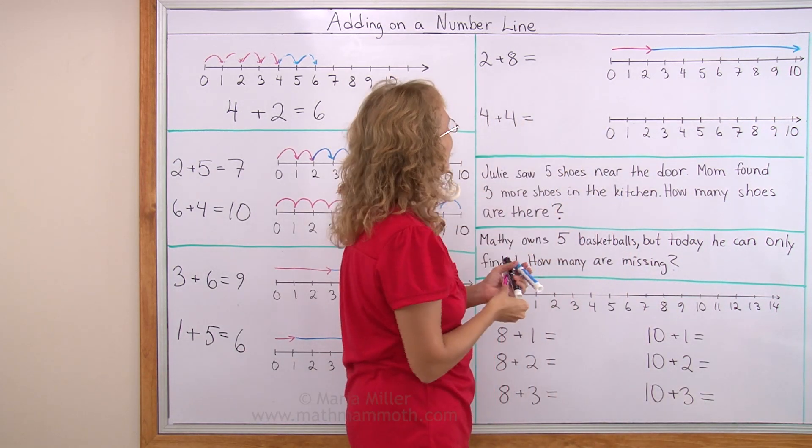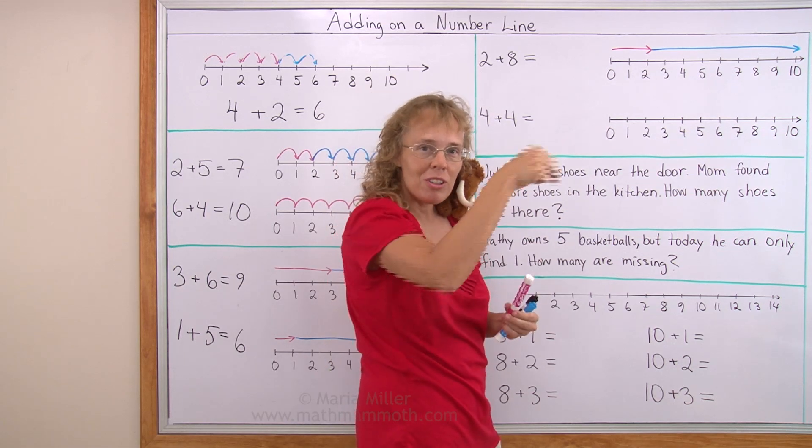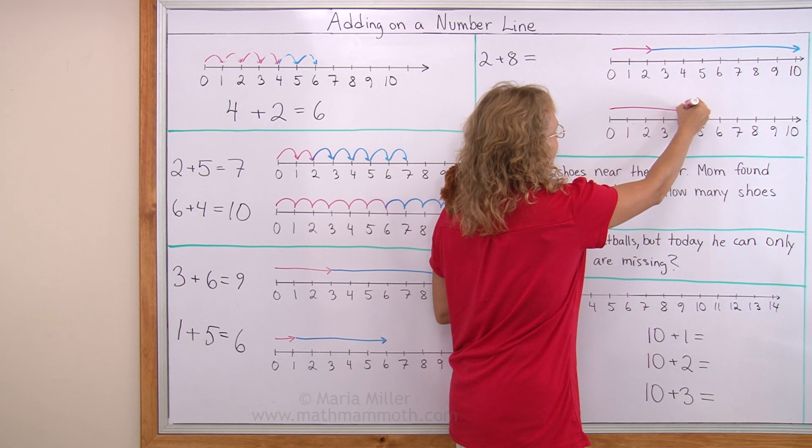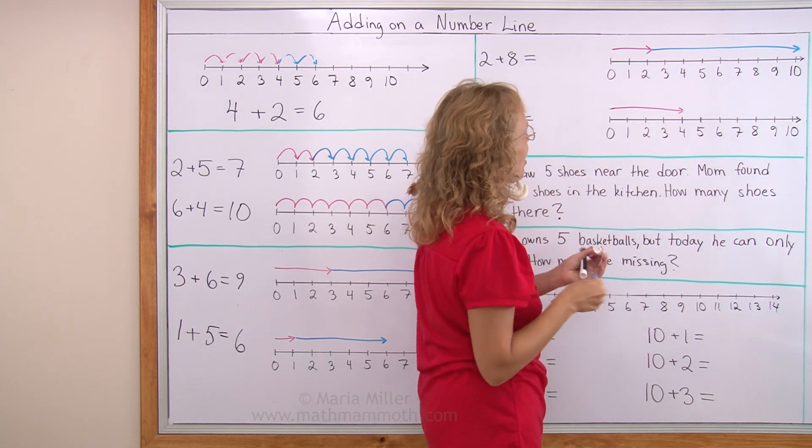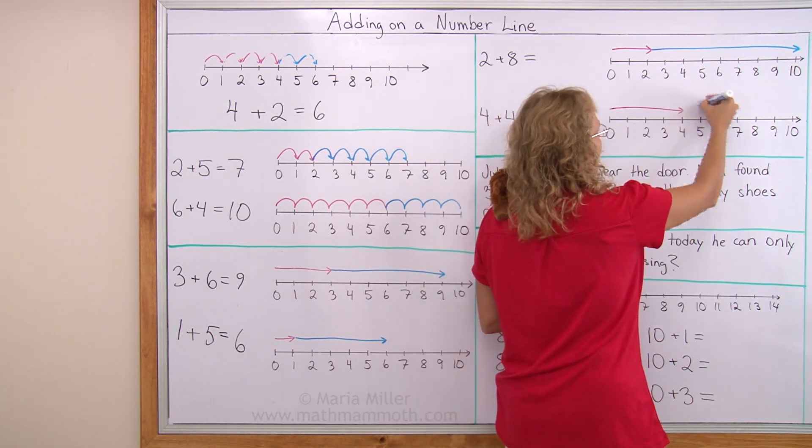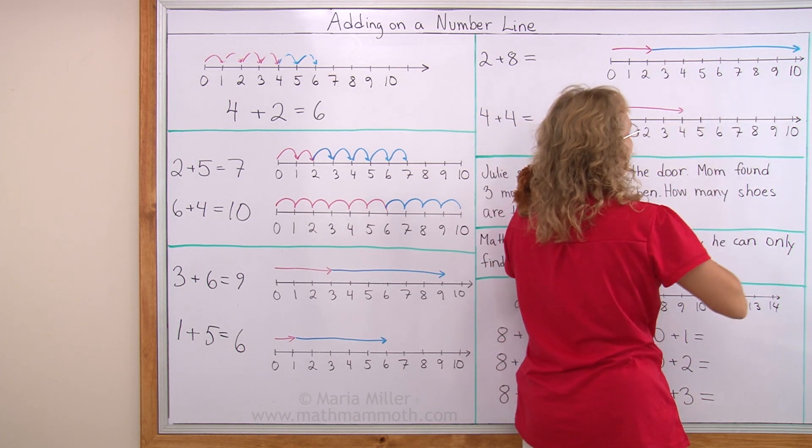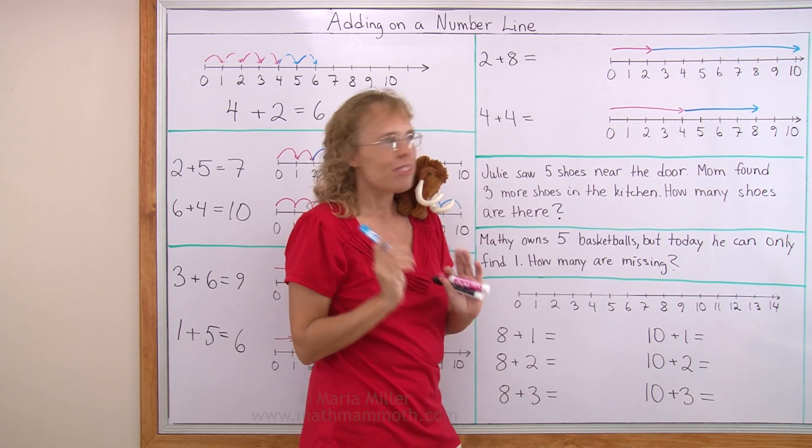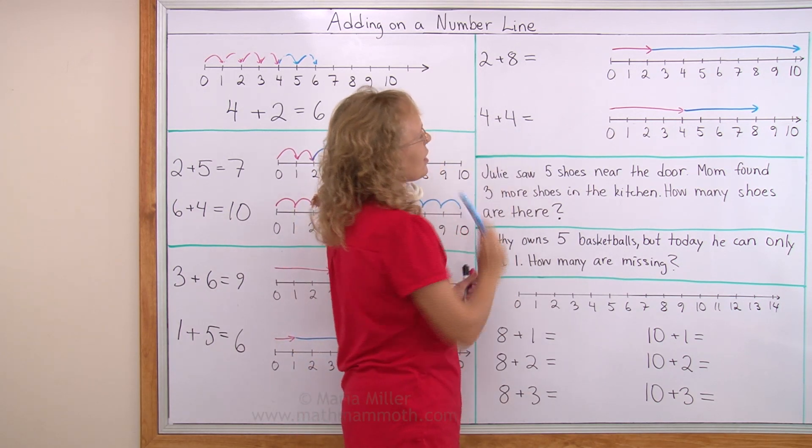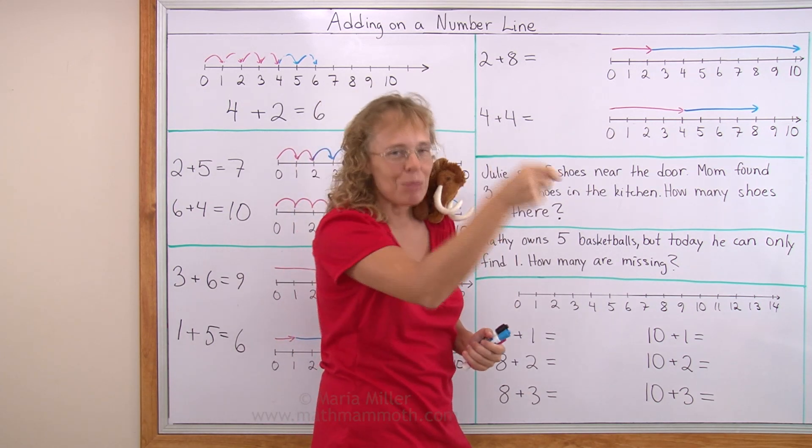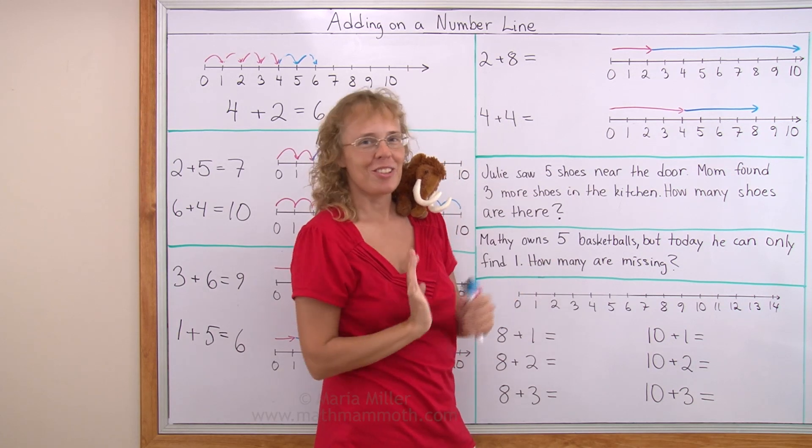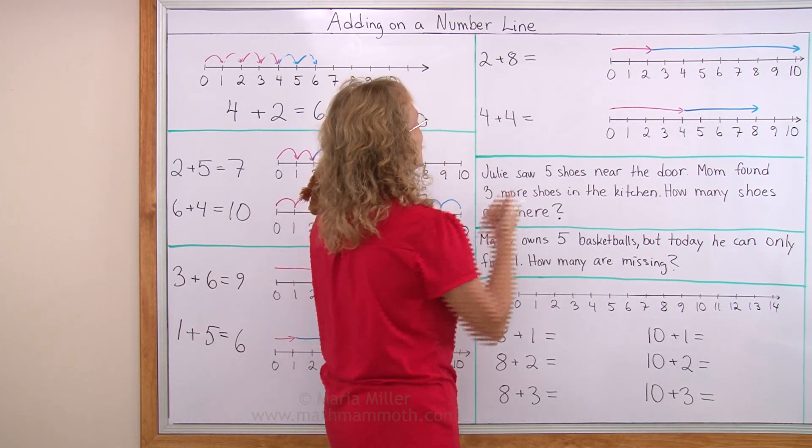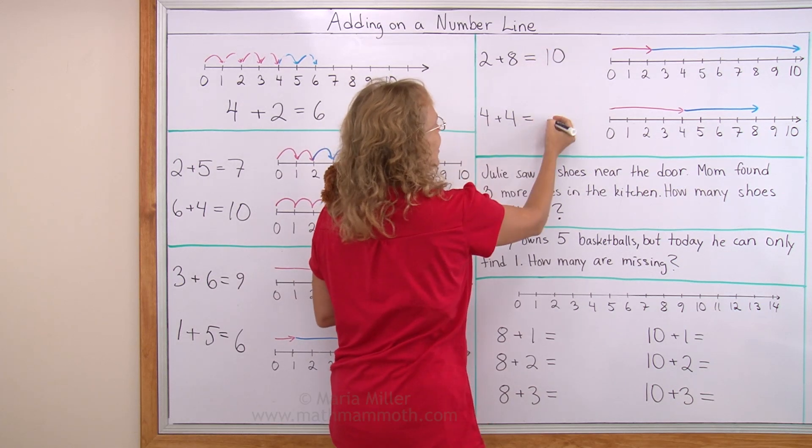4 plus 4. My first arrow will be 4 jumps long. 1, 2, 3, 4. Of course, till 4. And the second one, 4 long too. So it goes from 1, 2, 3, 4 all the way to 8. And if you find these arrows a little difficult and you have a problem like this, then just draw the little jumps for your rabbit or for Matty or your cricket. And the answer is, oops, forgot to write 10 here and 8 here.